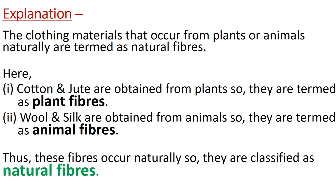Explanation: The clothing materials that occur from plants or animals naturally are termed as natural fibers. Here, cotton and jute are obtained from plants, so they are termed as plant fibers. However, wool and silk are obtained from animals, so they are termed as animal fibers. Thus, these fibers occur naturally, so they are classified as natural fibers.